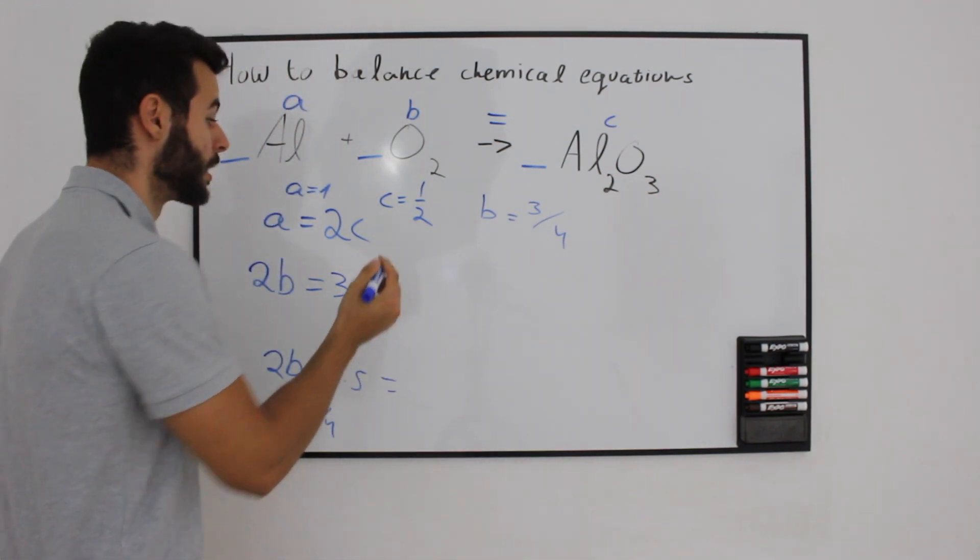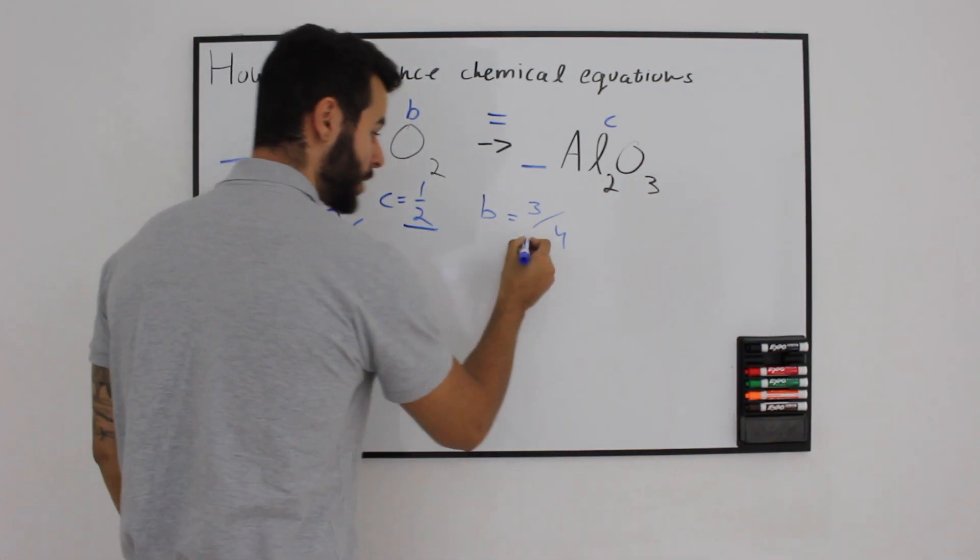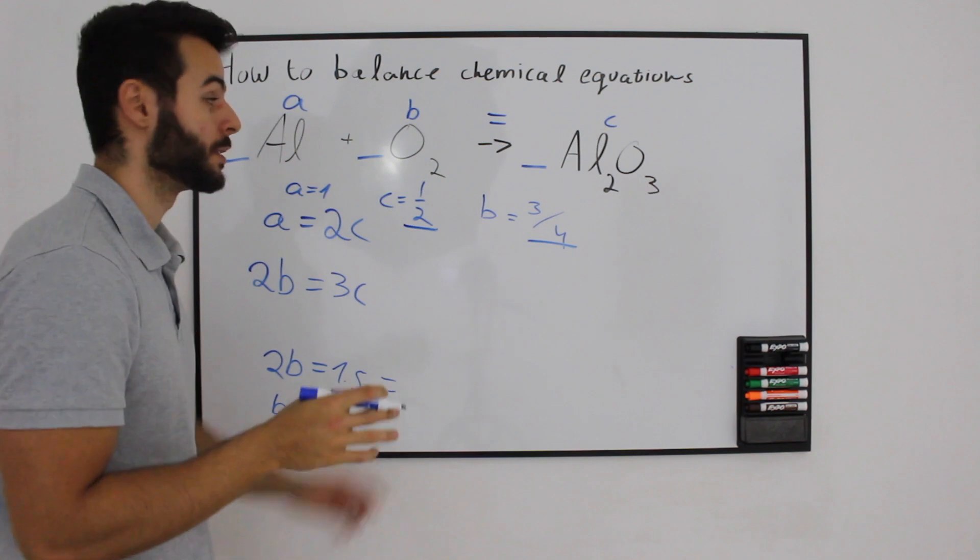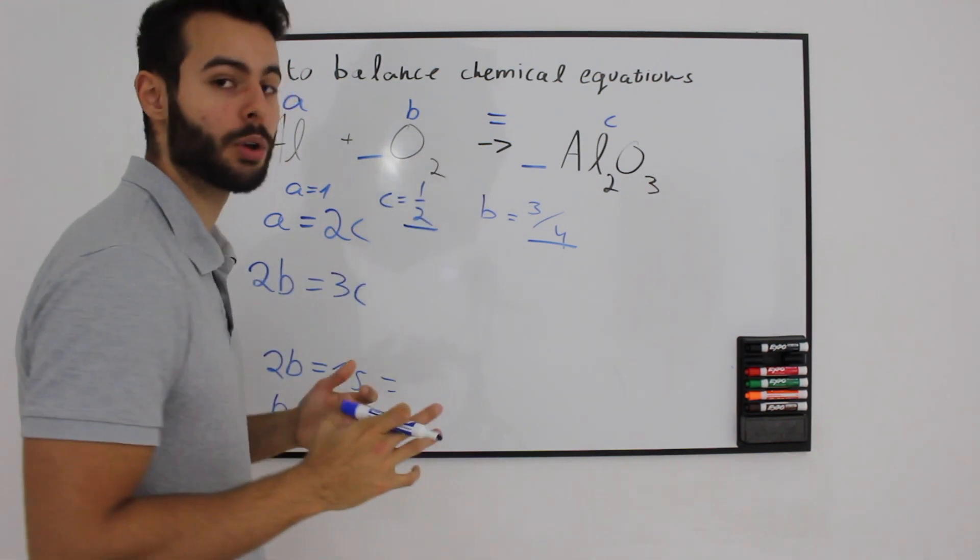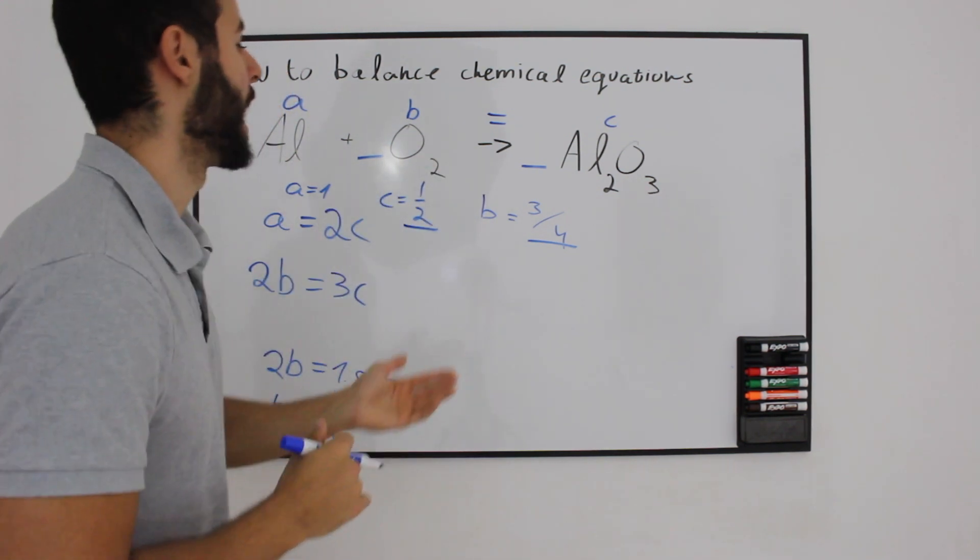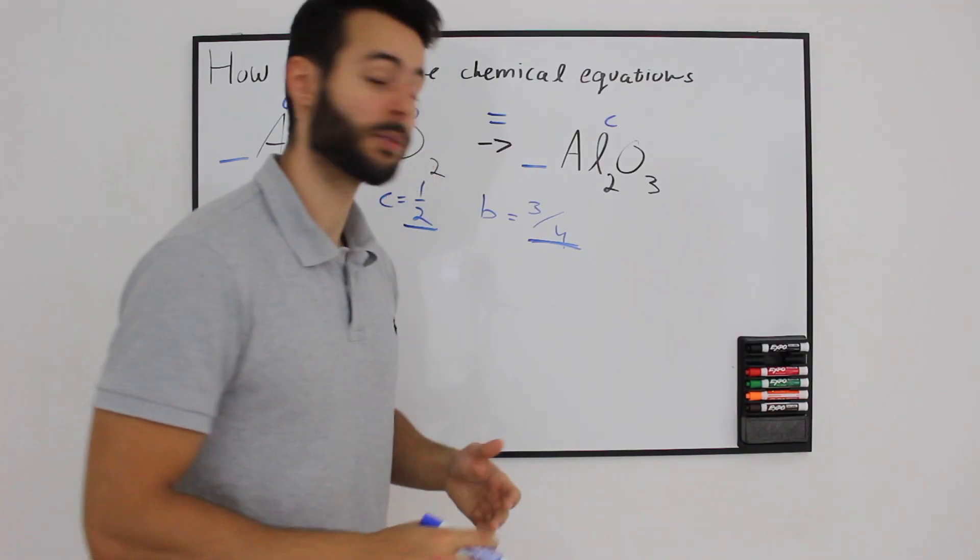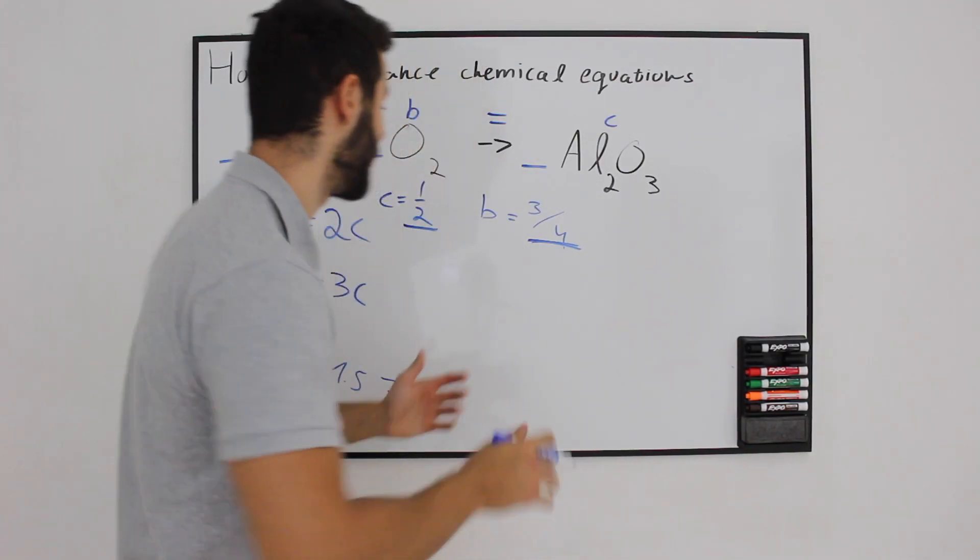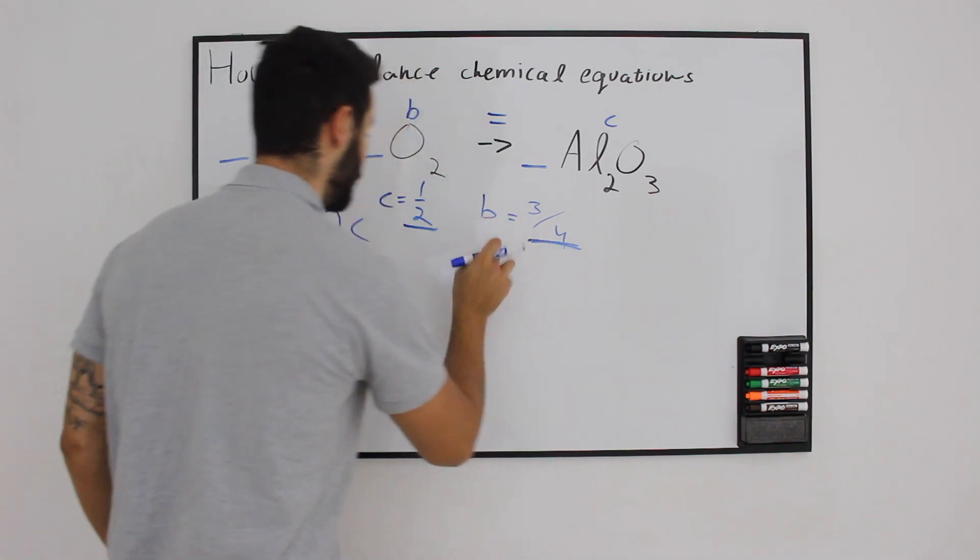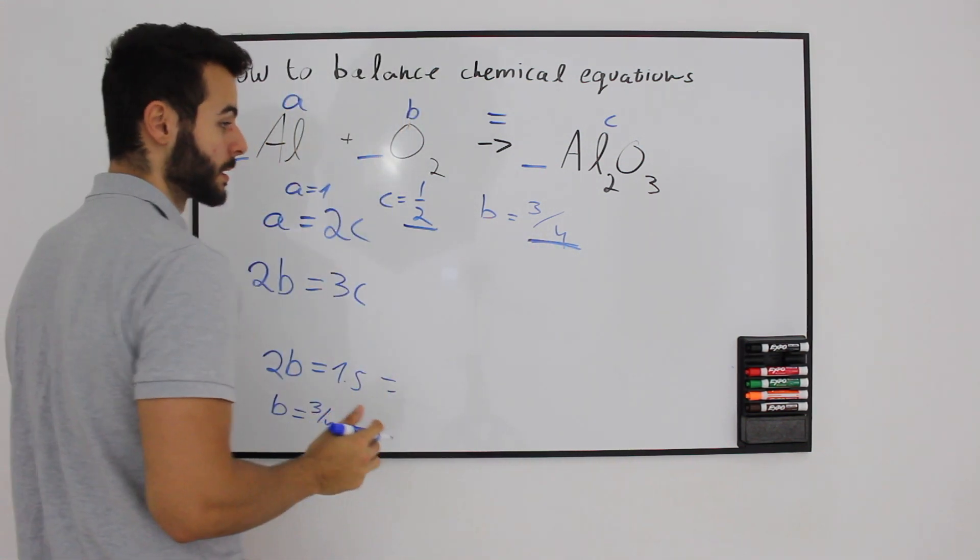But one problem is we can't have fractions inside the equation because you don't have half oxygen and you don't have 3 quarters of aluminium oxide.